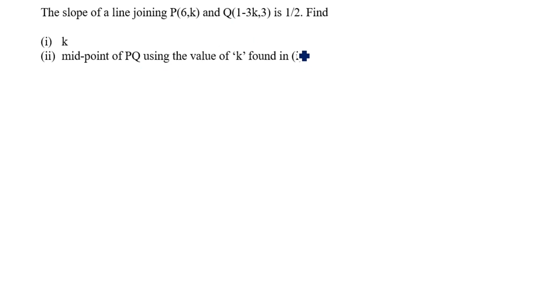First we need to find the k value from part 1. After that we substitute the k value in points P and Q. After that we will use the midpoint formula. Now we will find the k value. So how we will find k value in this case? What is the slope formula?